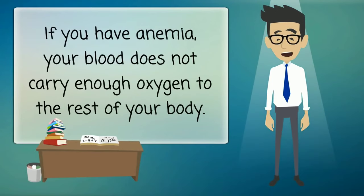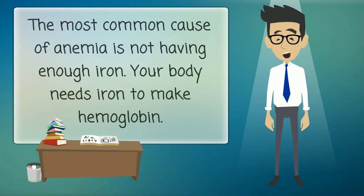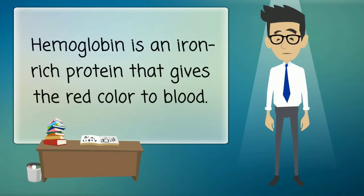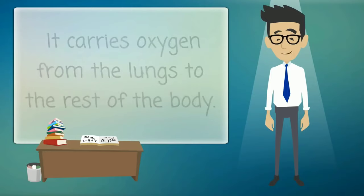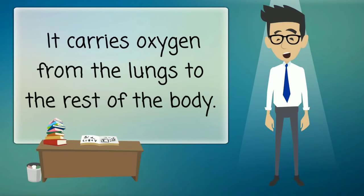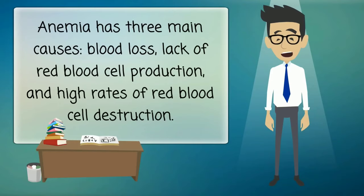If you have anemia, your blood does not carry enough oxygen to the rest of your body. The most common cause of anemia is not having enough iron. Your body needs iron to make hemoglobin. Hemoglobin is an iron-rich protein that gives the red color to blood and carries oxygen from the lungs to the rest of the body.